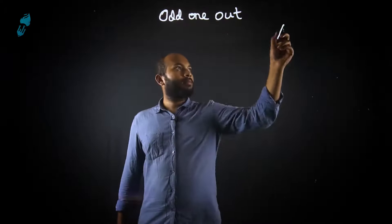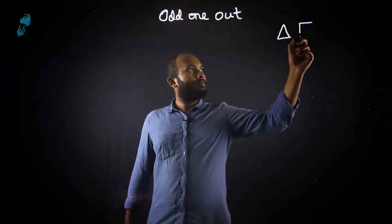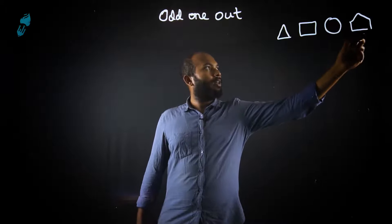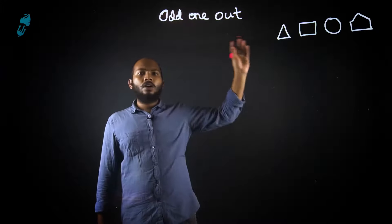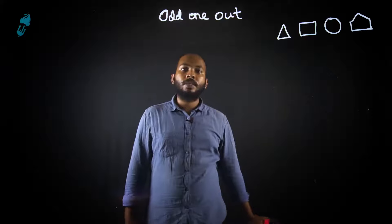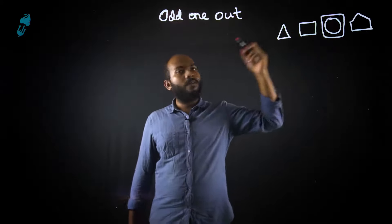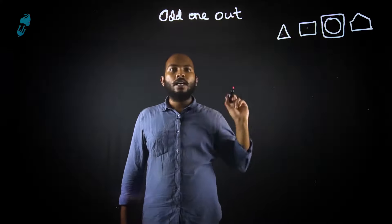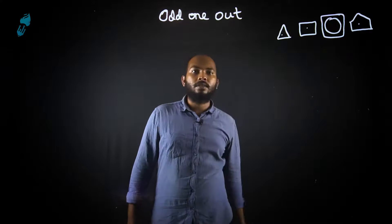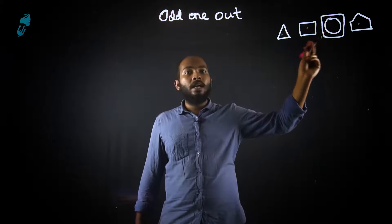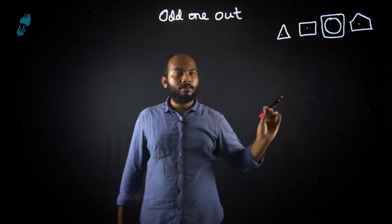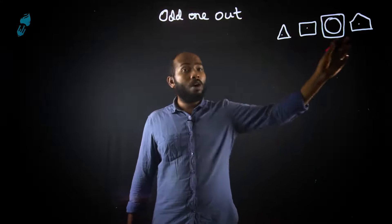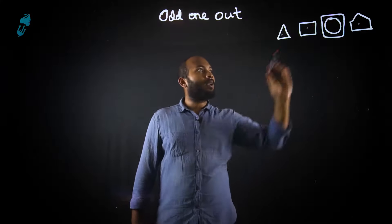Let me give you another example. You have a triangle, a square, a circle and a pentagon. Now what is the odd one out here? You guessed it right — a circle. Why? Because a triangle has three sides, a square has four sides, a pentagon has five sides. But a circle has no visible sides that you can count. So circle is an odd one out.